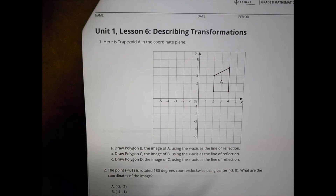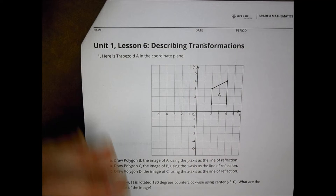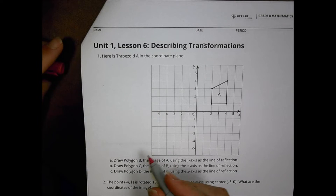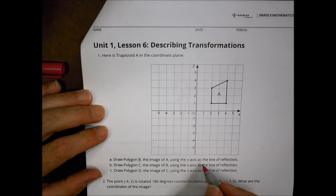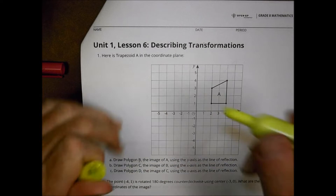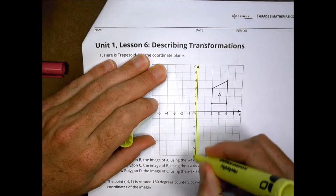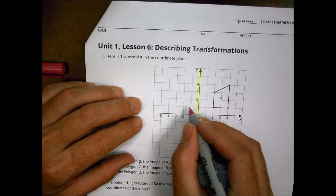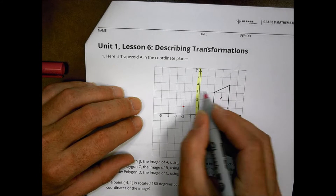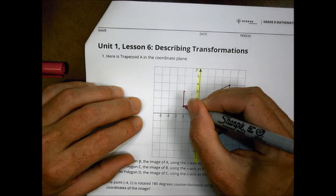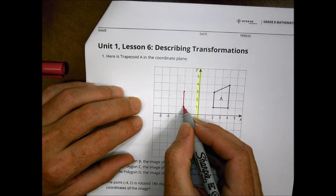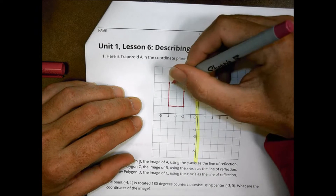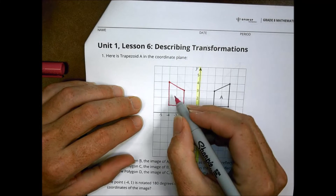Looking at today's homework assignment, we have trapezoid A and it asks you to do some things with it. First, draw polygon B, the image of A, using the y-axis as the line of reflection. Here's our y-axis, so we're going to reflect that shape over this line. I find the corresponding points — going one, two here and one, two over to match. This point is up and over two, so my first reflected point is here, two units long. The shape is three units high, so one, two, three high, and we mark that there. Then we connect our dots and that becomes shape B.